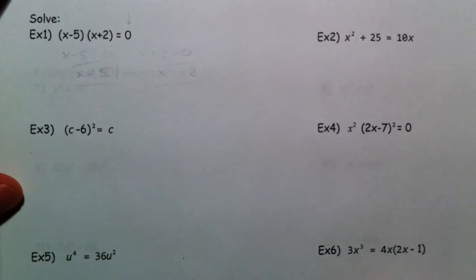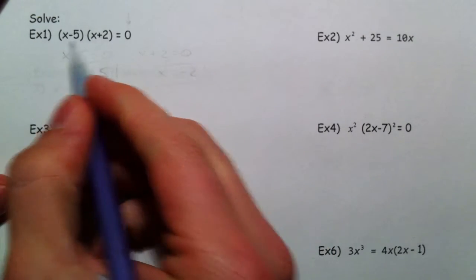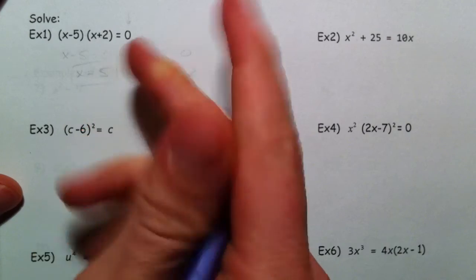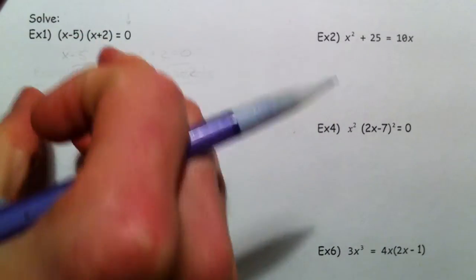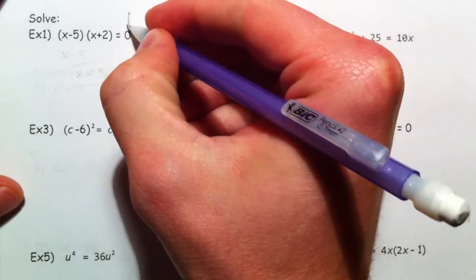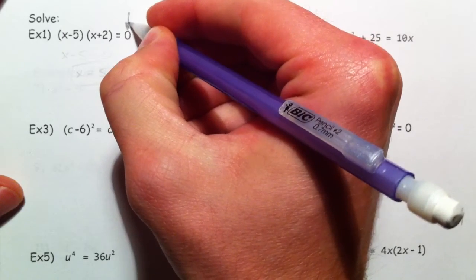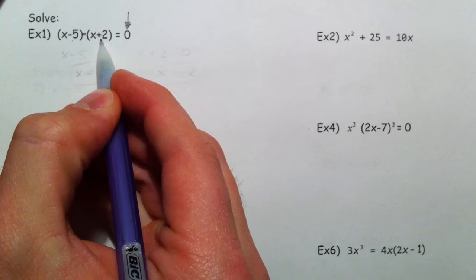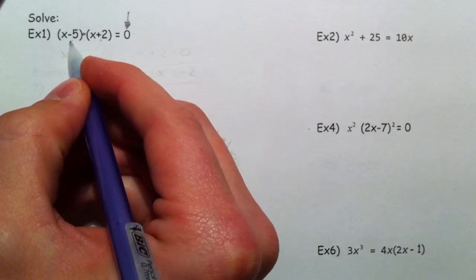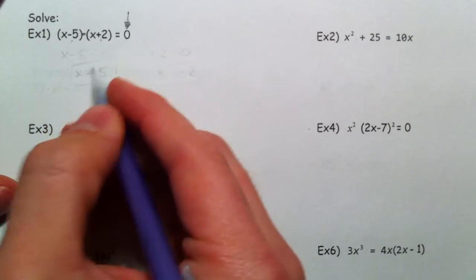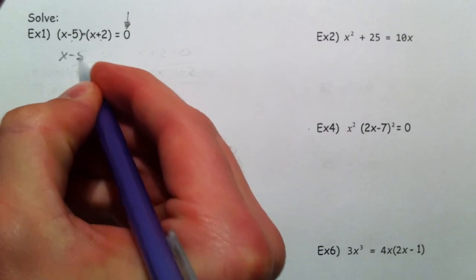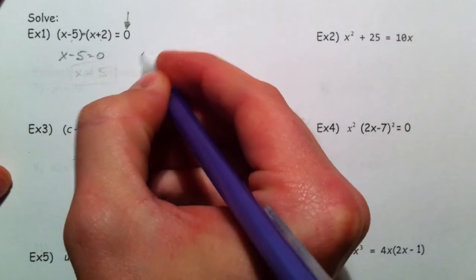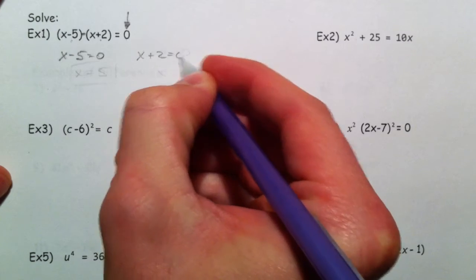Alright, so the whole reason we factor is so that we can stick it in equations, put everything on one side, factor, set it equal to zero. The zero is very important because some number times another number, now it kind of looks like multiple numbers in here, but a number times a number equals zero. So either x minus 5 has to equal zero, or x plus 2 has to equal zero.